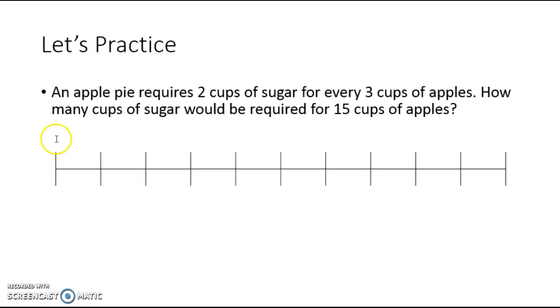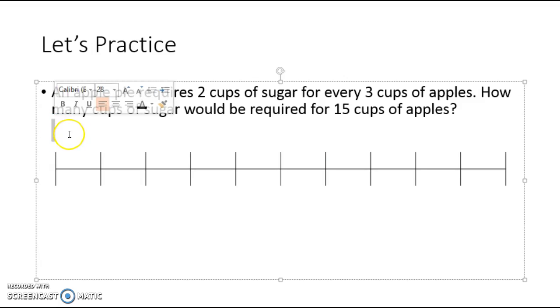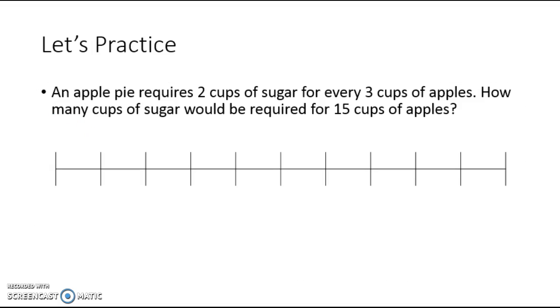So what I'm going to be doing is I'm going to be writing on my double number line. So here we go, I'm just getting my pen ready. Okay, so I'm going to be writing on my double number line. So this represents my 2 cups of sugar and this represents my 3 cups of apples.